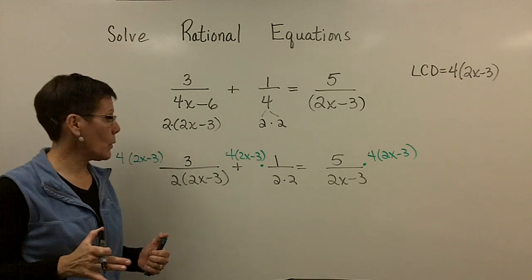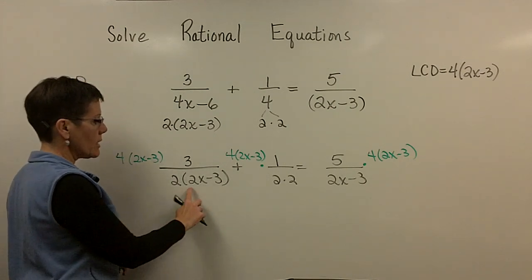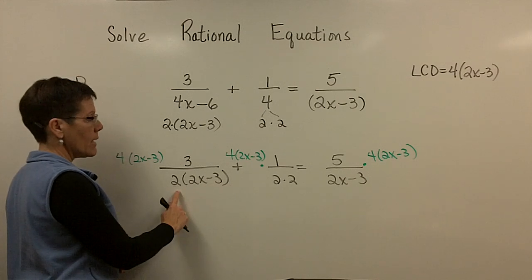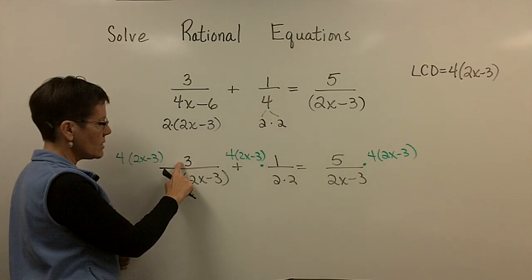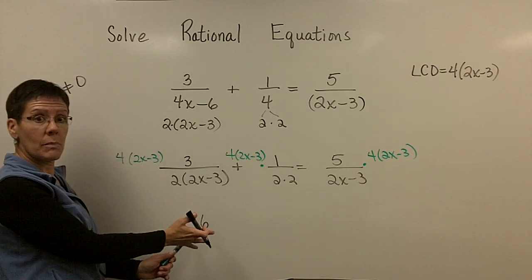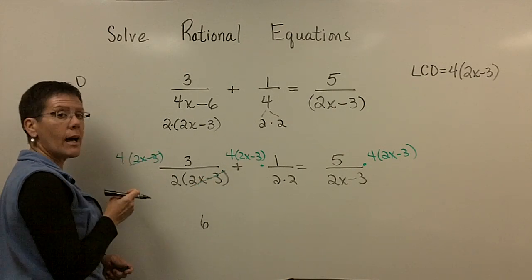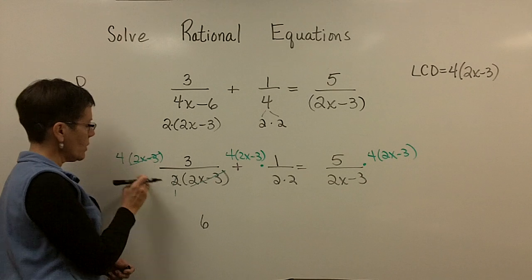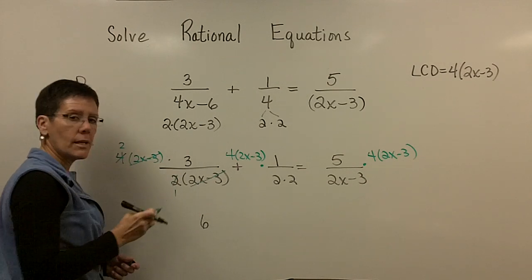Again, what a lot of people come down to at this point, it's very similar to adding and subtracting rational expressions, is they look at that denominator and they say of that, it's missing the 2. So they just take 3 times 2 and get 6 and they drop the denominator. That's all I'm going to be left with because those are going to cancel out. 2 goes into here once, 2 goes into there twice, and 2 times that 3 is 6.